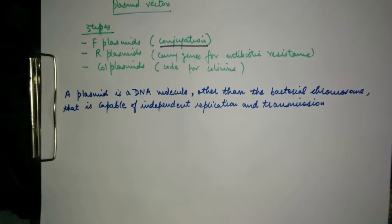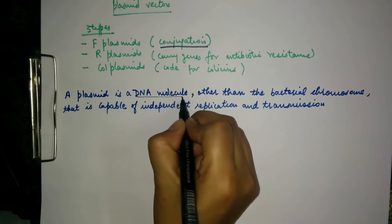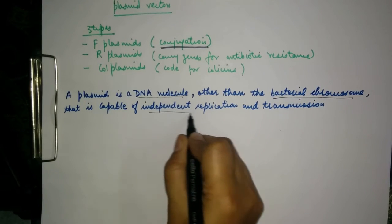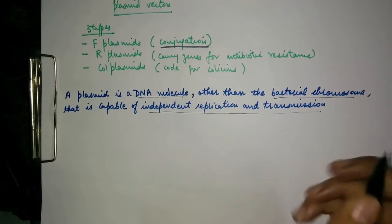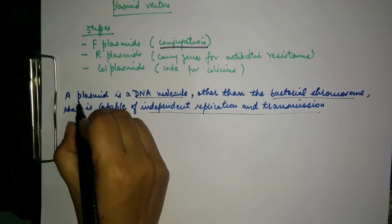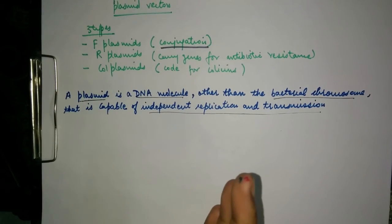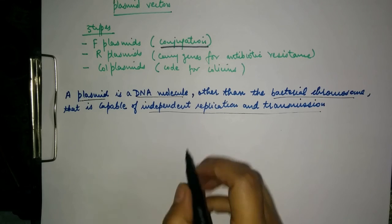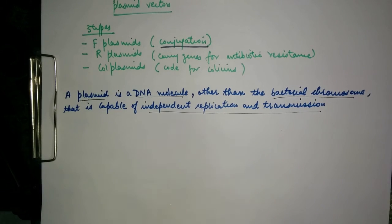A plasmid is a DNA molecule other than the bacterial chromosome that is capable of independent replication and transmission, which means that this plasmid is a DNA that is not in the genomic DNA. It's a different DNA than the bacterial chromosomal DNA.